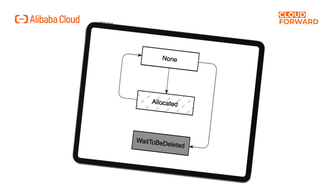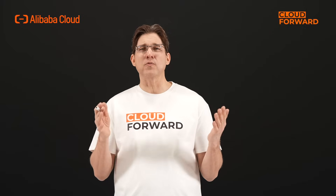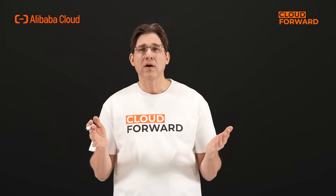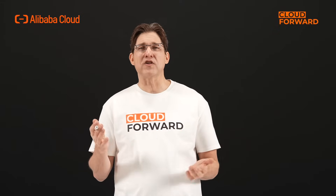The overall state transformation model: the default state after the room server is pulled up is available with OpState as None. After assigning the room server, the matching system sets it to Allocated. When the room server state is judged to be None for a long time through a coroutine, the OpState will be set to WaitToBeDeleted through customized service quality. We find that some states are determined by the room server business and need to be exposed to the Kubernetes level so they can be linked to the automatic scaler, matching system, etc.